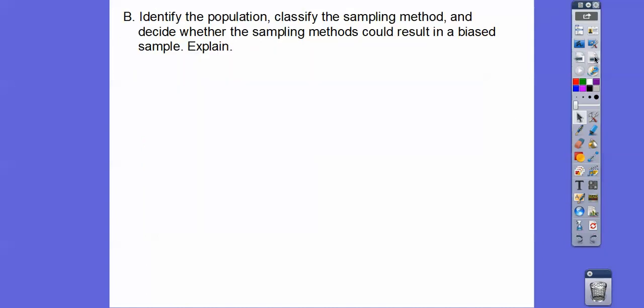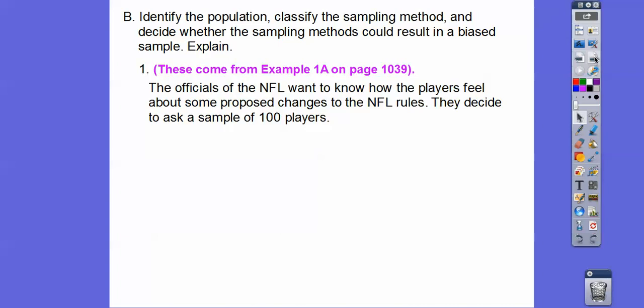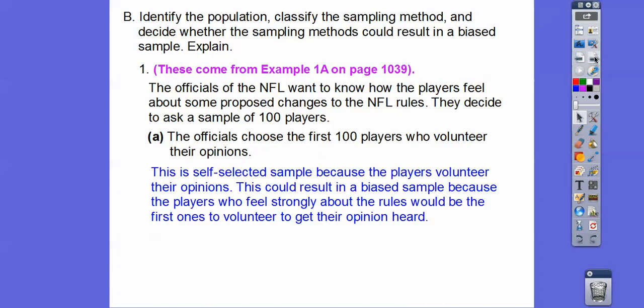So identify the population, classify the sampling method and decide whether the sampling methods could result in some bias. And then explain. So just so we can save some time on writing here. So we've already done a lot in my class. So these come from example 1A on page 1039. So the officials of the NFL want to know how the players feel about some proposed changes to the NFL rules. They decide to ask a sample of 100 people. So here's the first one. So the officials choose the first 100 players who volunteer their opinion. Well, that one would be the self-selected sample because they're volunteering their opinions.